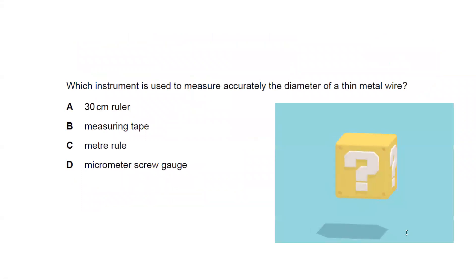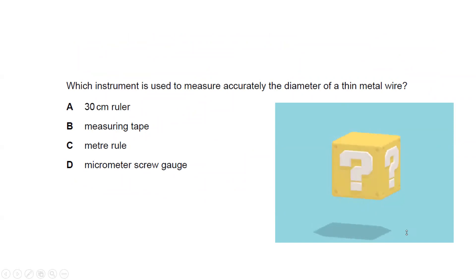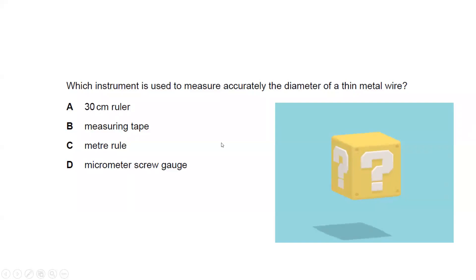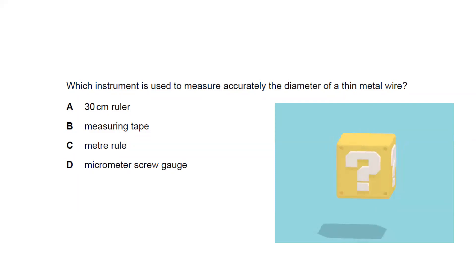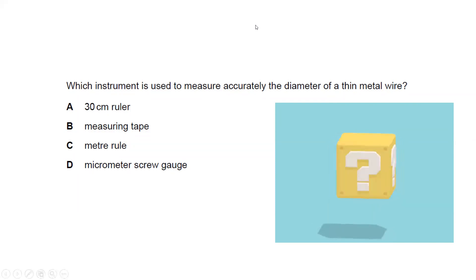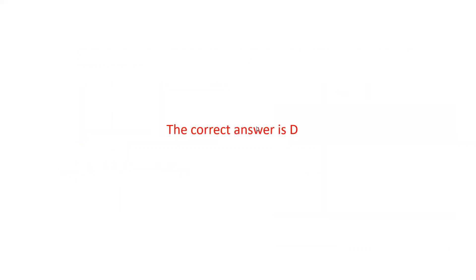Next question: which instrument is used to accurately measure the diameter of a thin metal wire? Options are a 30 cm ruler, a measuring tape, a meter rule, and a micrometer screw gauge. The most accurate instrument is the micrometer, so the correct answer is D.